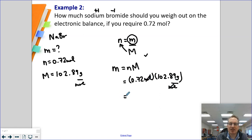I'm just going to multiply the two numbers together. 102.89 times 0.72. And my answer, I go back, I get two significant digits. So my answer is going to be 74 grams.